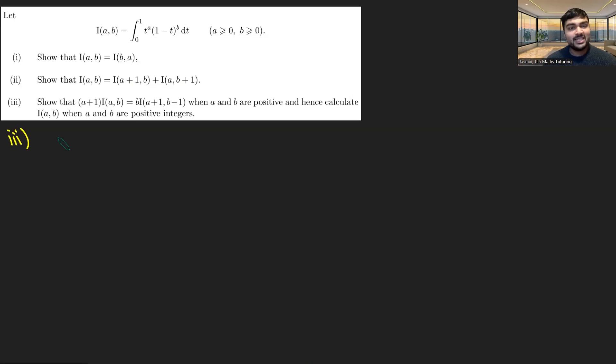So for the final part, we need to think about how we're going to get from I(a,b) to I(a+1,b-1). And we've also got these constants b and a+1 floating about. Well, what I notice here is that in this right hand side, I've got the a going up to a+1 and the b going down to b-1. And I think about when have I seen before where something goes up and something else goes down at the same time?